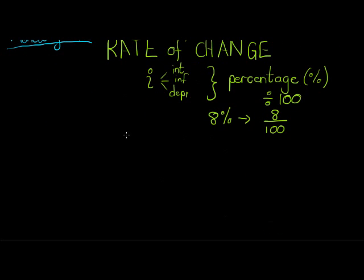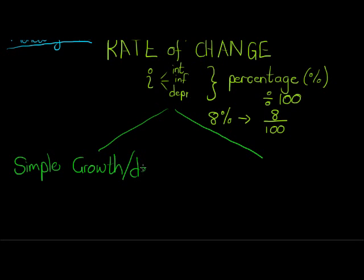Now with that in mind, we get two types of changes. So obviously something can grow or something can depreciate. We're going to use growth and decay. And we can get simple growth, simple growth and or decay. Decay just means it decreases over time. Or we can get compound, compound growth or decay.